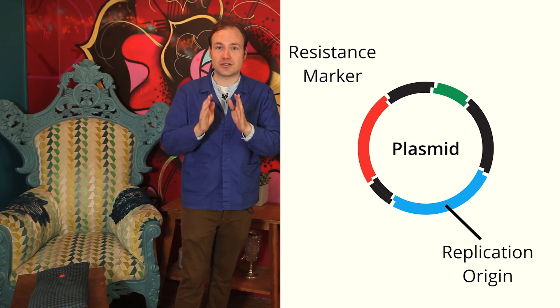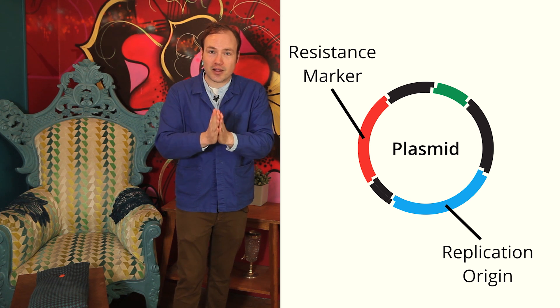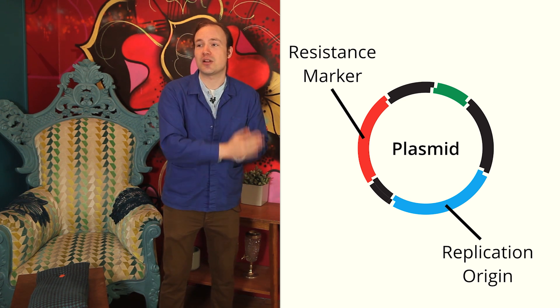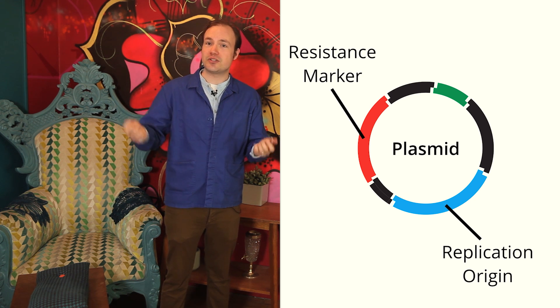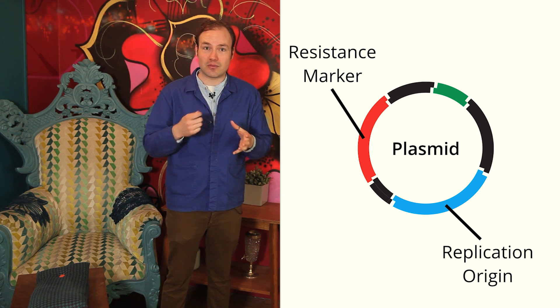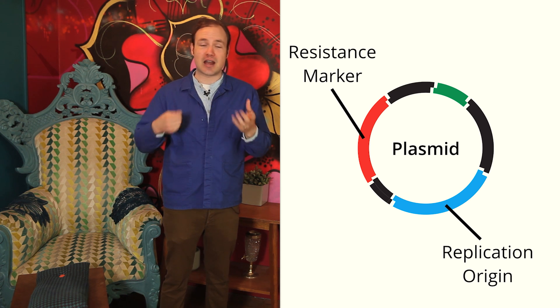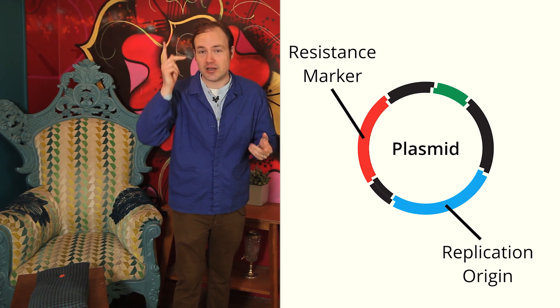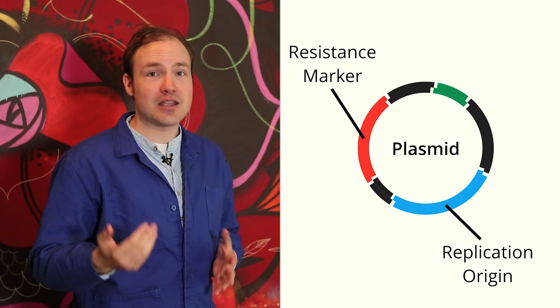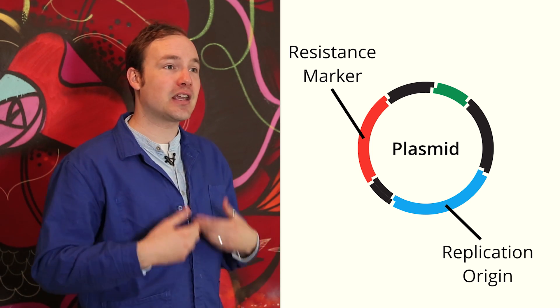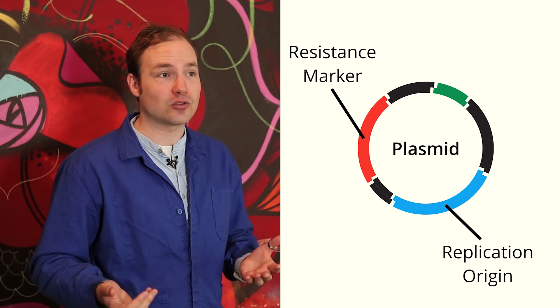Second, the antibiotic resistance marker. Antibiotic resistance gives us a way to separate cells that carry the plasmid from those that don't. Resistance to many antibiotics can be conveyed by a single gene. The gene codes for an enzyme that inactivates the antibiotic or pumps it out of the cell. So, if we add the antibiotic to a culture of cells, we know that only cells carrying our plasmid will survive and grow.